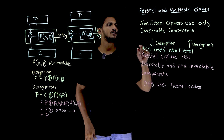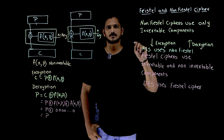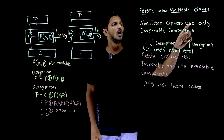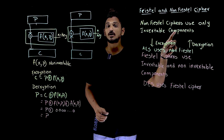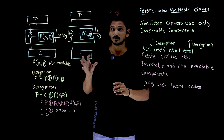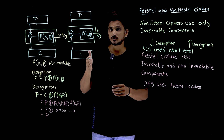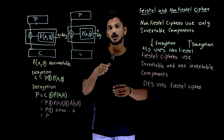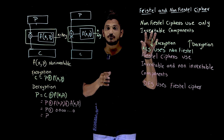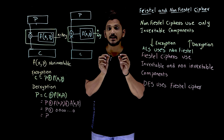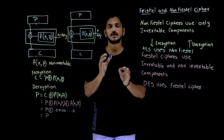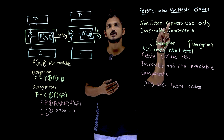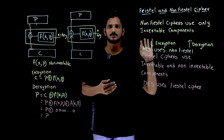Coming to today's class, first we are going to understand non-Feistel ciphers. Non-Feistel ciphers use only invertible components. In our last class discussions, S-Box and P-Box can be invertible and non-invertible. So if you are going to use only invertible components, then those types of modern block ciphers, we call them non-Feistel ciphers.